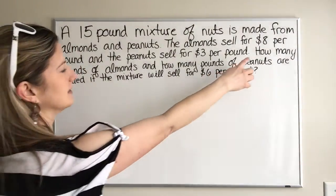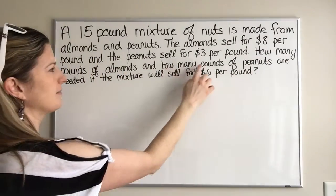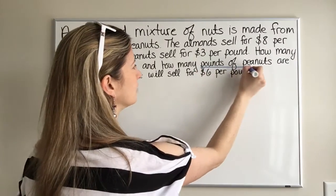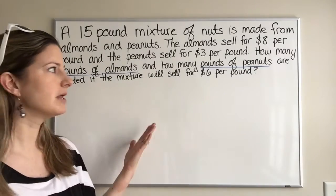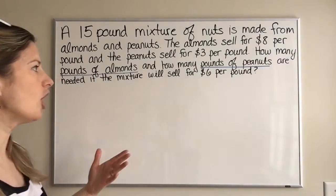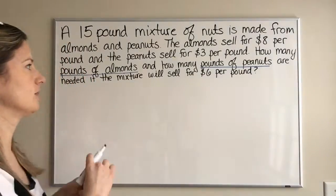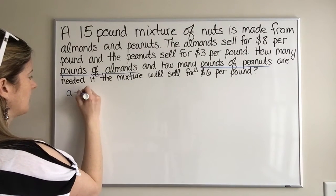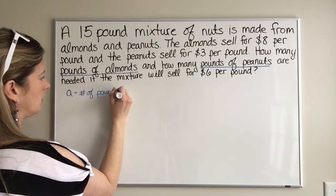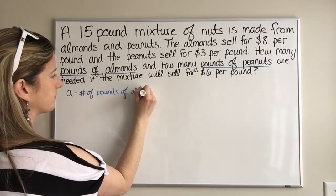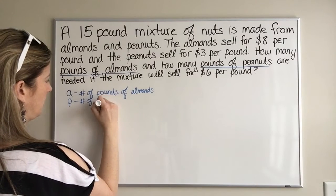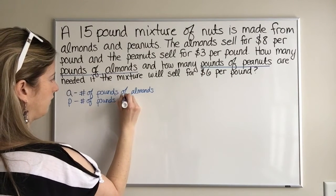Let's look at what the last sentence is: 'How many pounds of almonds and how many pounds of peanuts?' Right there, they're asking you how many pounds of almonds and how many pounds of peanuts — those are your variables, that's what you're trying to solve for. So let's call A the number of pounds of almonds, and P the number of pounds of peanuts.